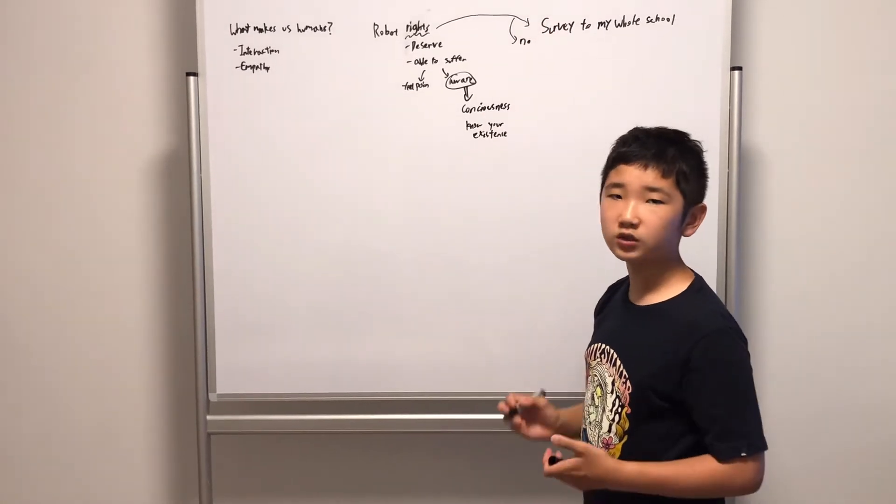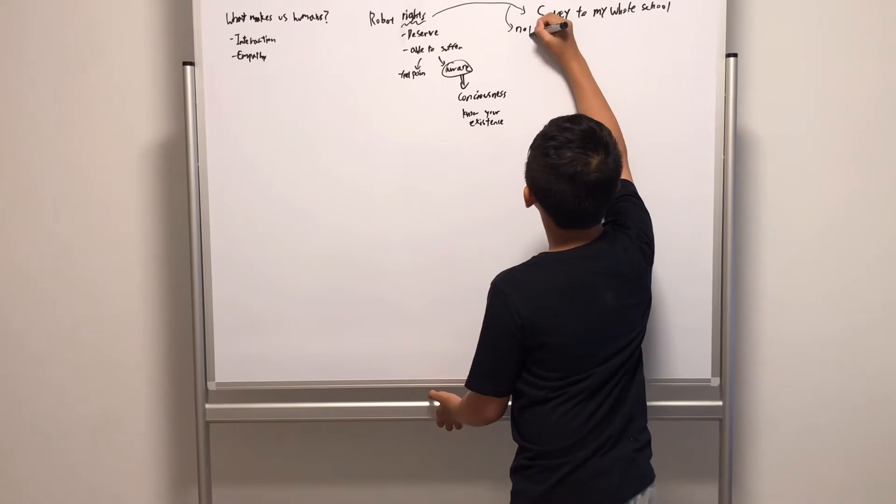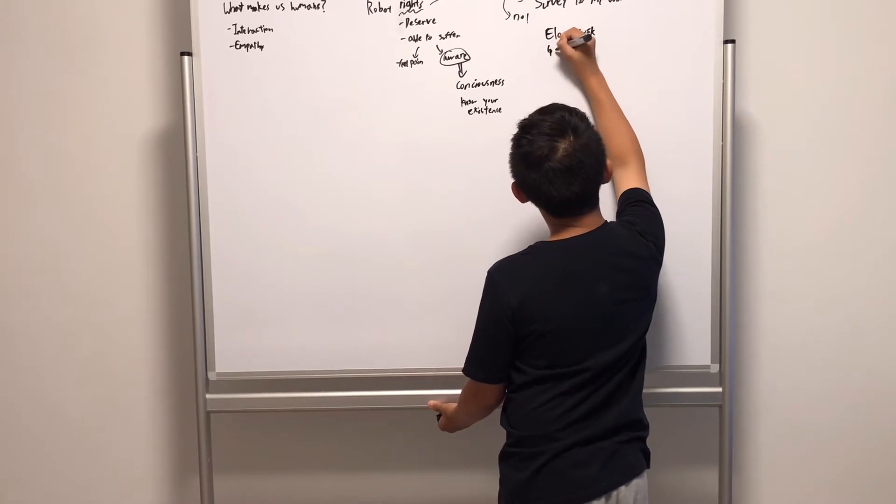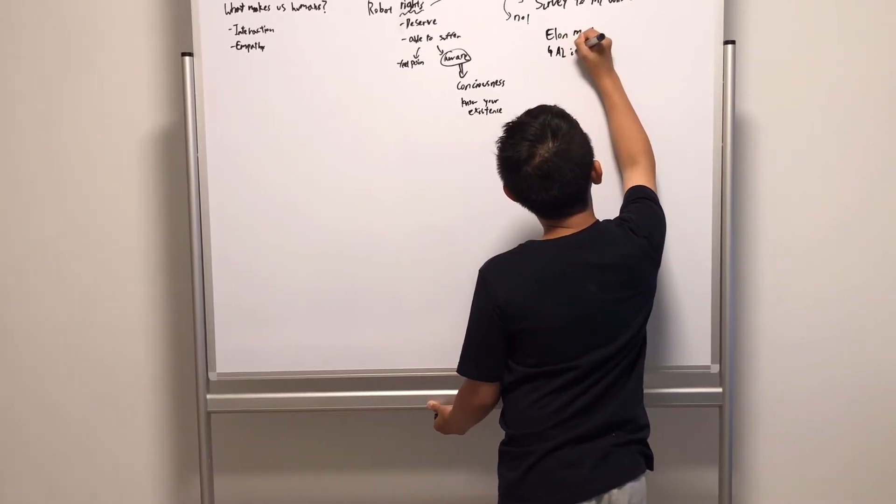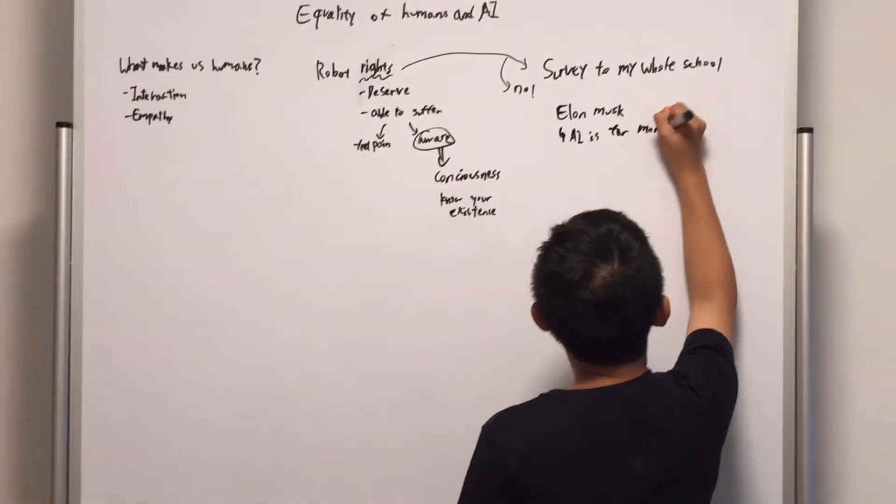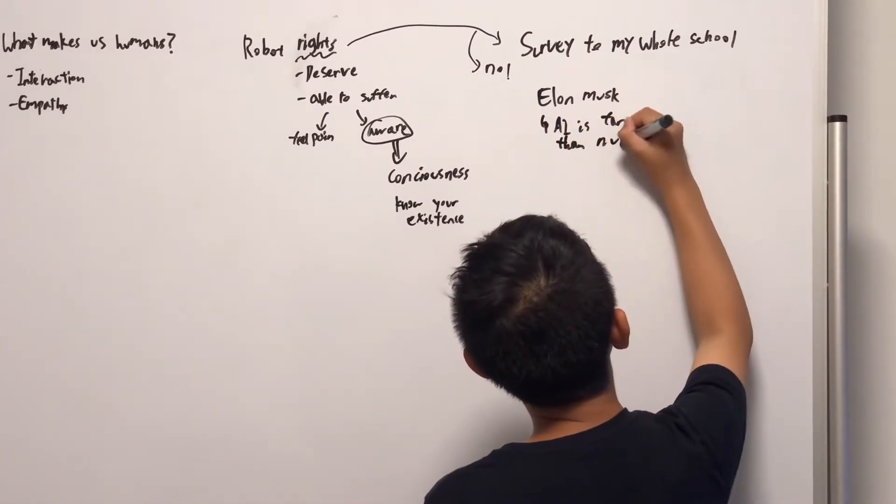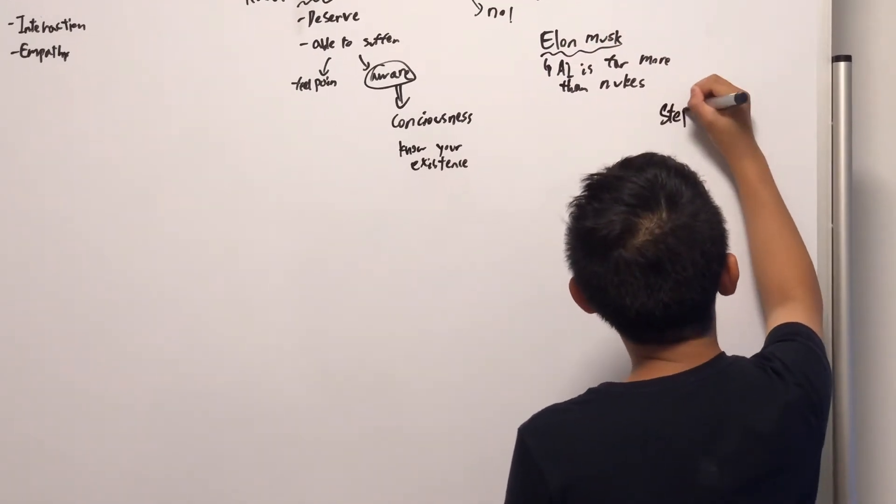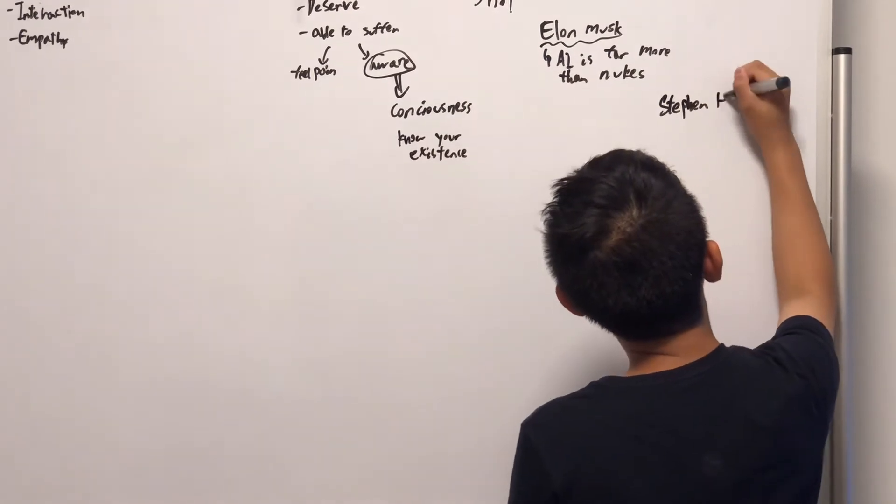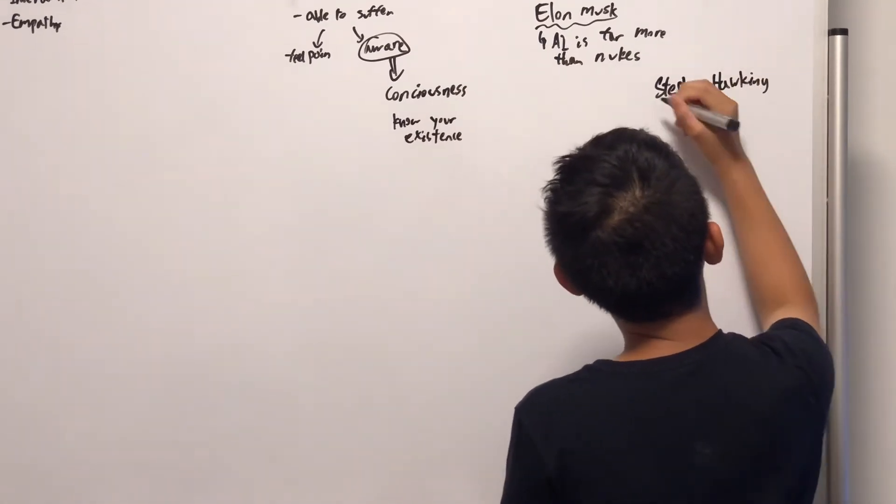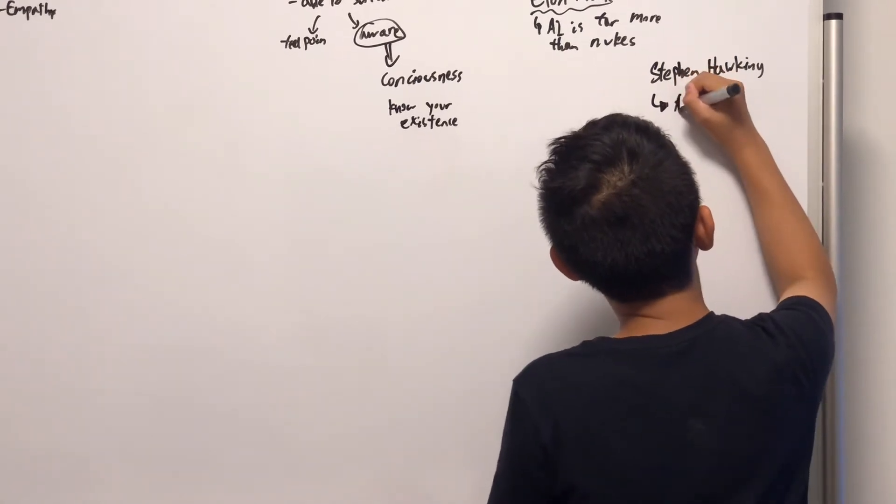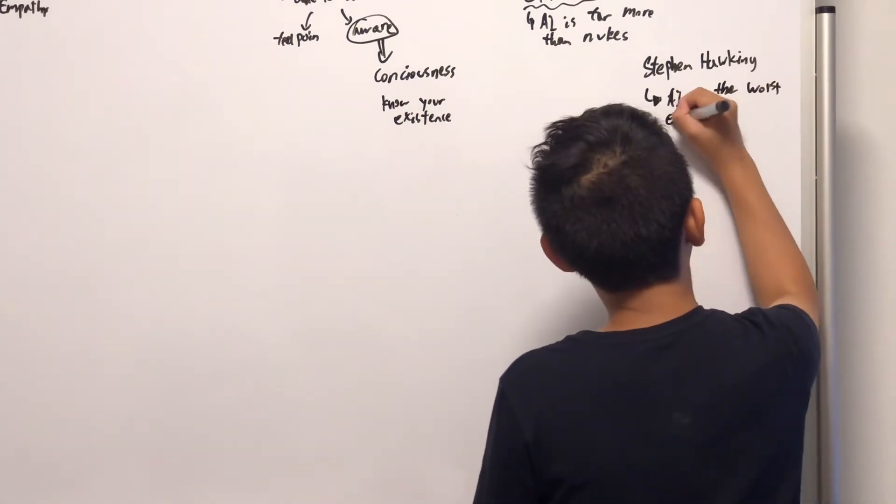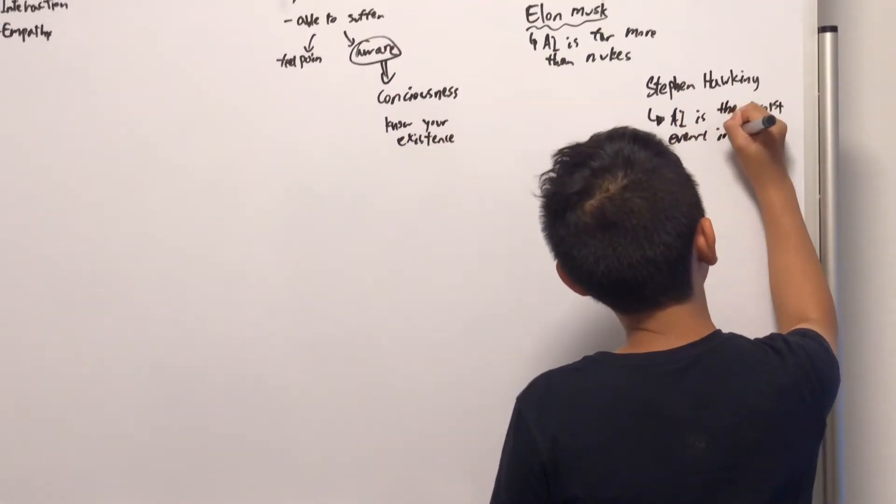But some scientists are trying to warn us that AI could be dangerous. Scientists like Elon Musk said that AI is far more dangerous than nukes. You know what nukes means? They mean like nuclear, like nuclear bomb. Or Musk. There's also Stephen Hawking. You probably know Stephen Hawking. He's really famous. Stephen Hawking said that AI is the worst event in history, like in human history. AI is the worst event in history.